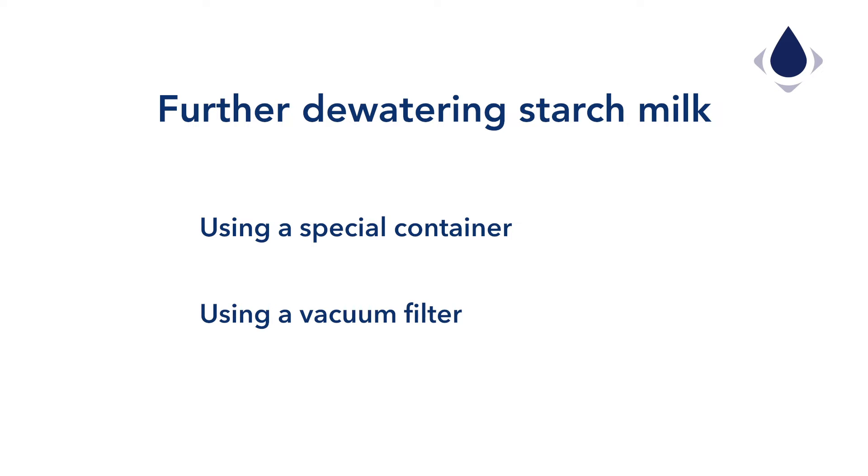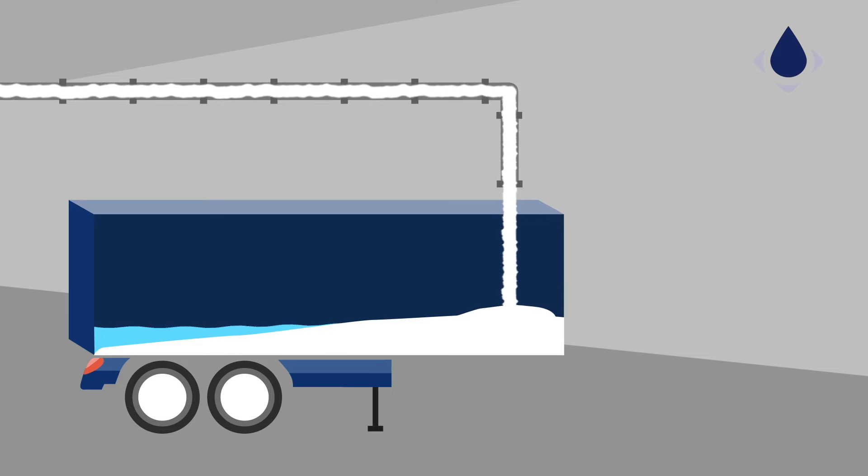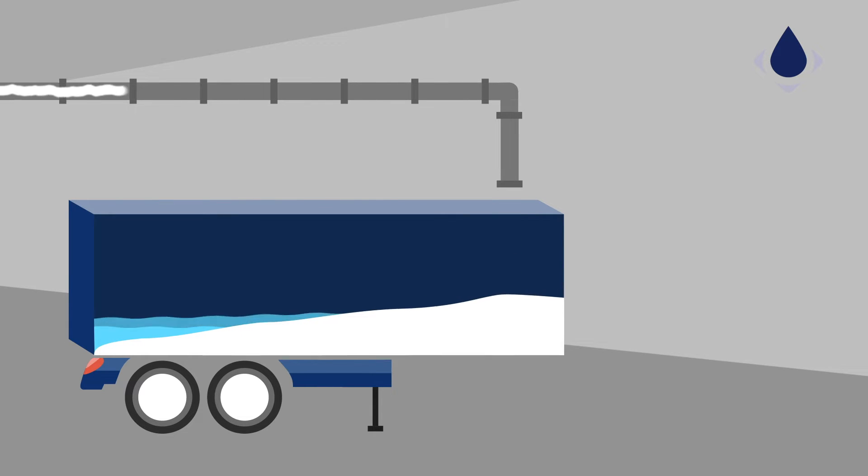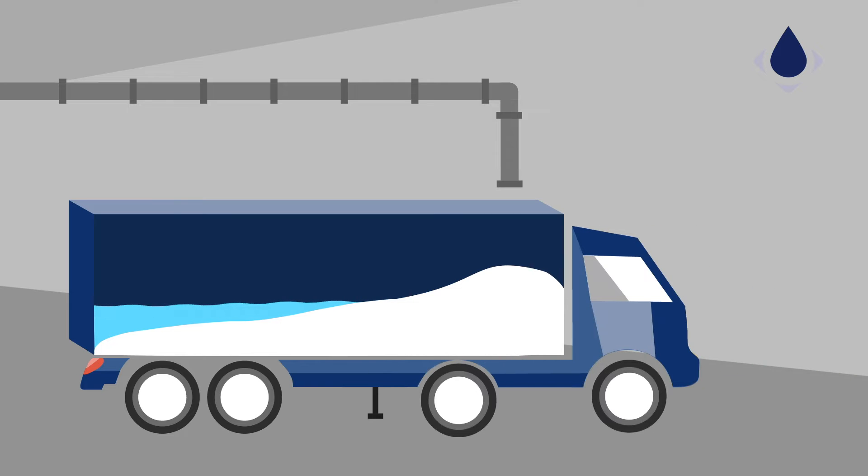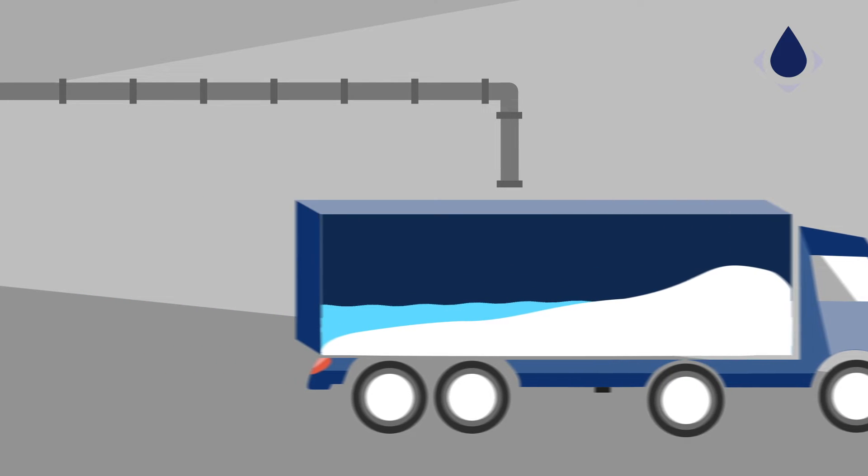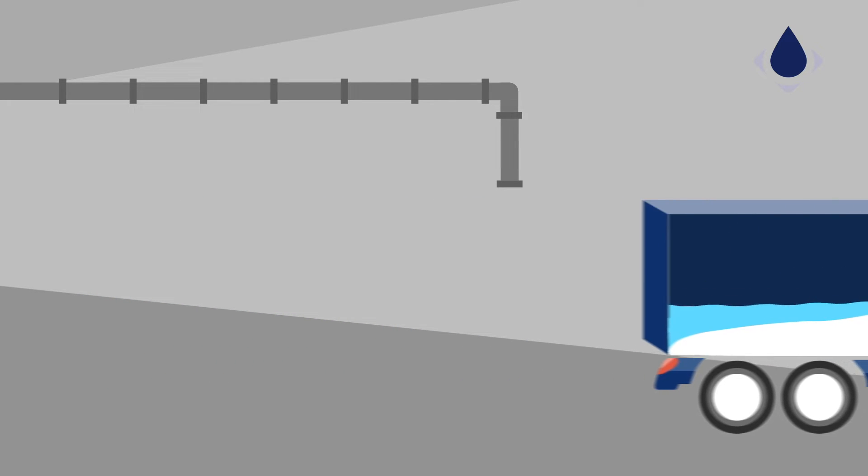The first option is de-watering using a special container. The concentrated starch milk is sent to a truck container. When the container is full, it will be picked up and transported to another location for further processing. This option is only feasible when the starch processor is in proximity to the customer's production site.